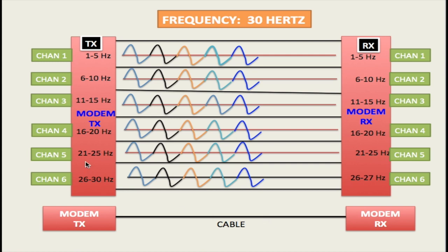So now you should have an understanding of basically how modems break down the frequency in order to send it from one modem to the other — how it breaks down into channels. In this case I used five cycles in each channel. With modems like DSL modems and cable modems, obviously the frequency is much higher so the breakdown is different, but it's the same concept. Next I'm going to talk about data and how we use frequency and bandwidth to modulate our data from the transmitting modem to the receiving modem.